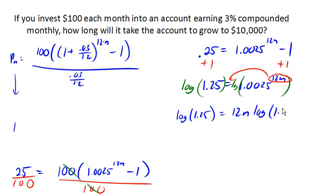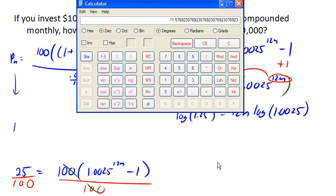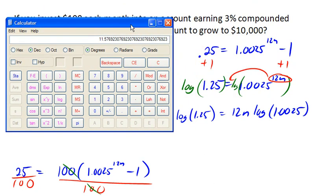So now we can pull out our calculators. So on here, we've got 1.25 logarithm is .0969. So .0969.